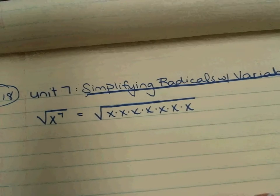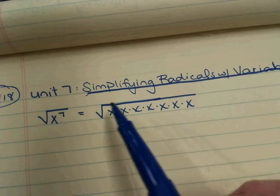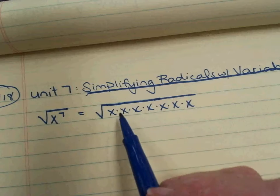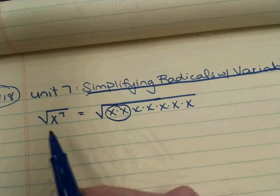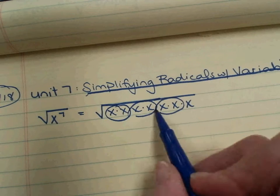All right, so x to the 7th means x times itself 7 times, and when we're taking the square root, we're looking for groups of 2, groups of size 2, or pairs. So there are three pairs.